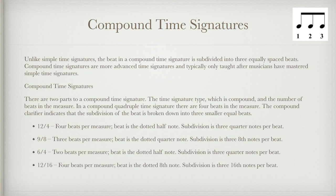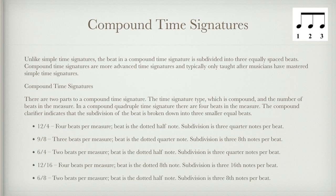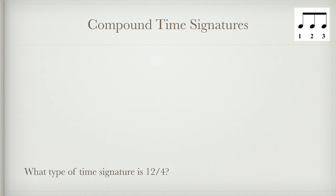In 12/16, there are four beats per measure; the beat is a dotted eighth note and the subdivision is three sixteenth notes per beat. In 6/8, there are two beats per measure; the beat is a dotted half note and the subdivision is three eighth notes per beat. So 12/4 is a compound quadruple time signature — you divide 12 by 3 to arrive at four sets of three subdivisions.